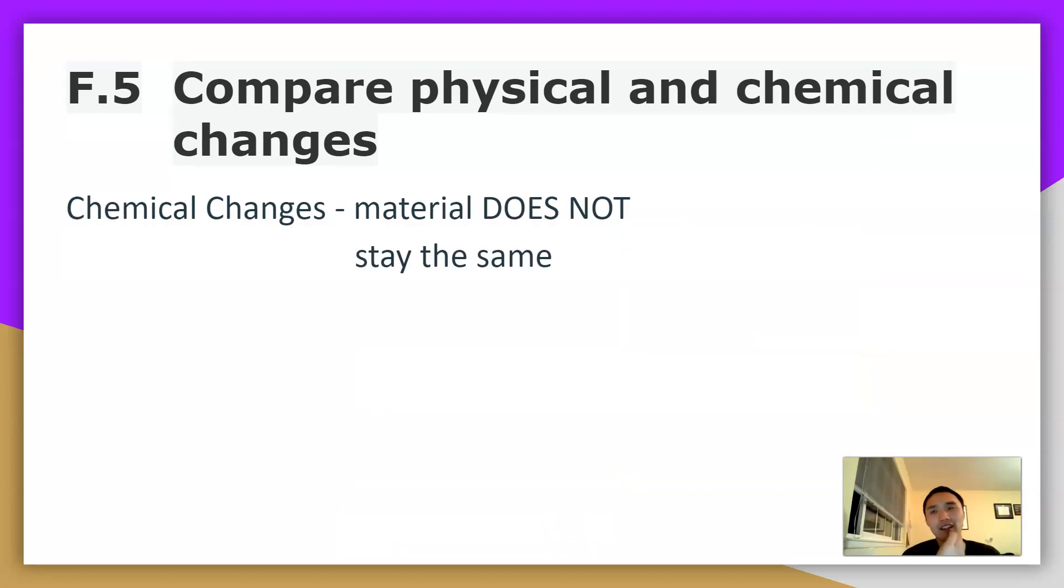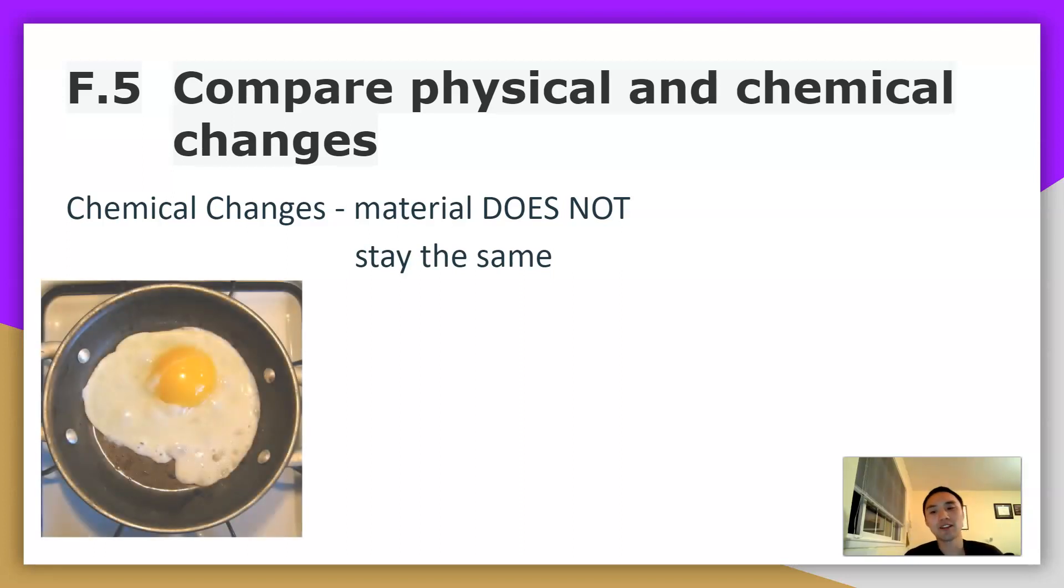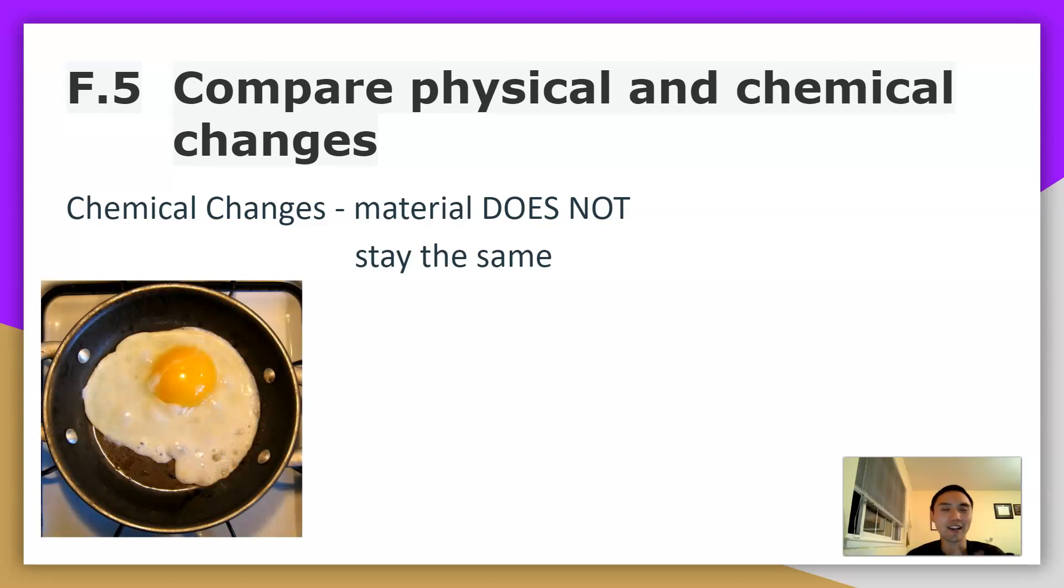Chemical changes, these are typically anything where the material does not stay the same after the change has occurred. So some common examples in real life are like frying an egg is a chemical change because you went from a yogi egg to a much harder, stiffer egg. And it might seem like it's a physical change because it looks like a state of matter change, but in actuality, you cannot revert that egg back to its original condition. So chemical change.